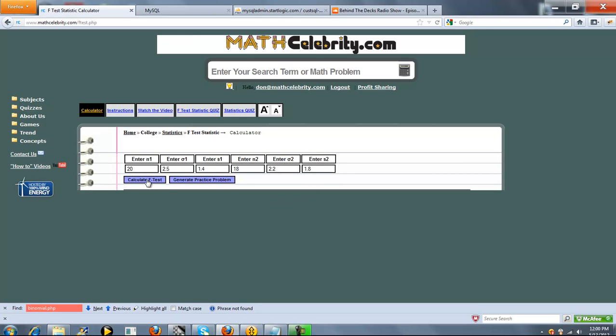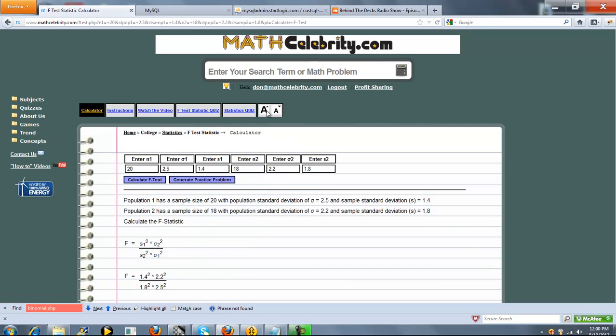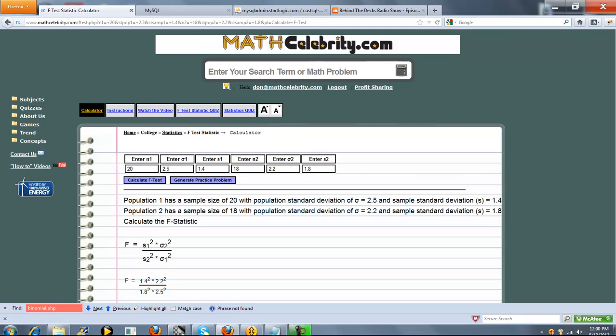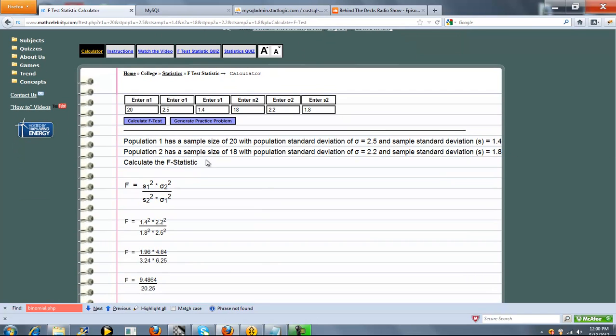So when you're all set with your six inputs, go ahead and press Calculate F-Test. So it basically summarizes your problem here, and we're going to calculate the F-Test Statistic.